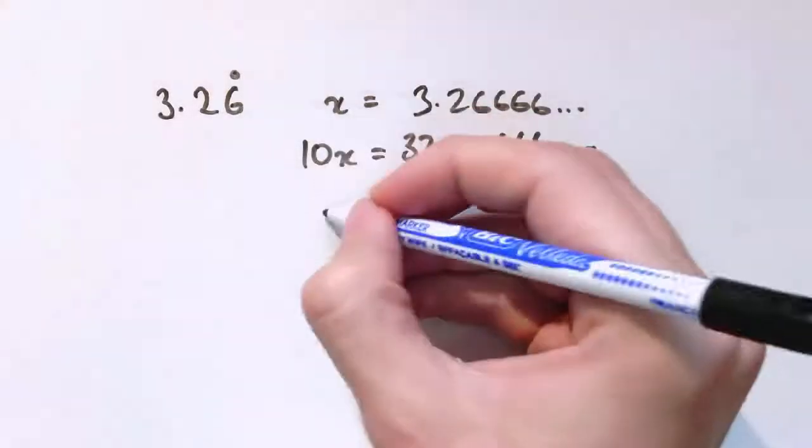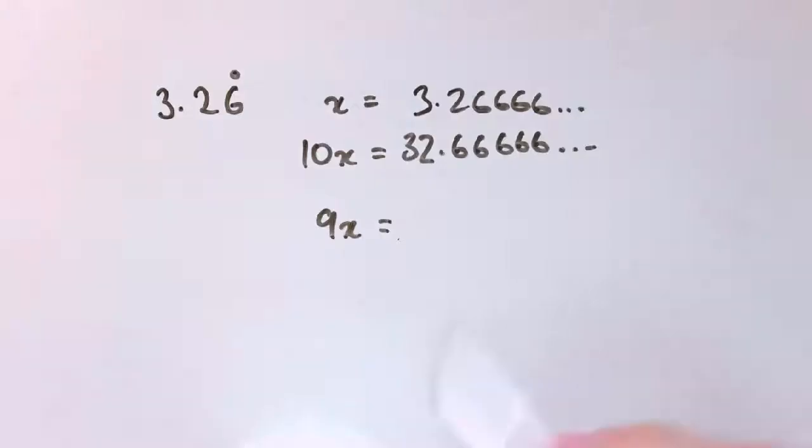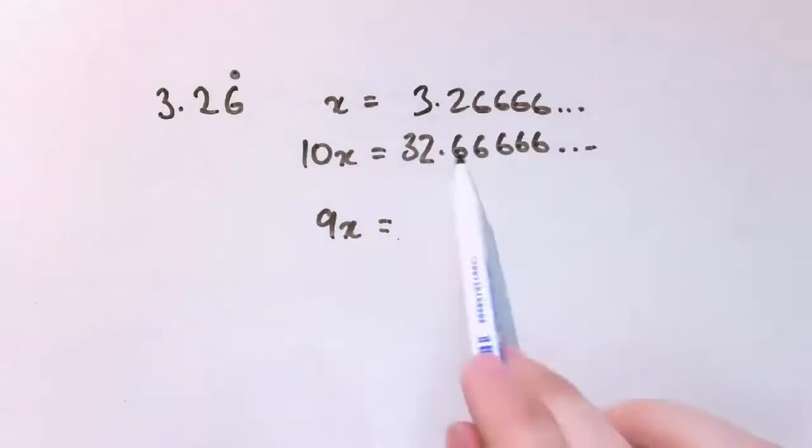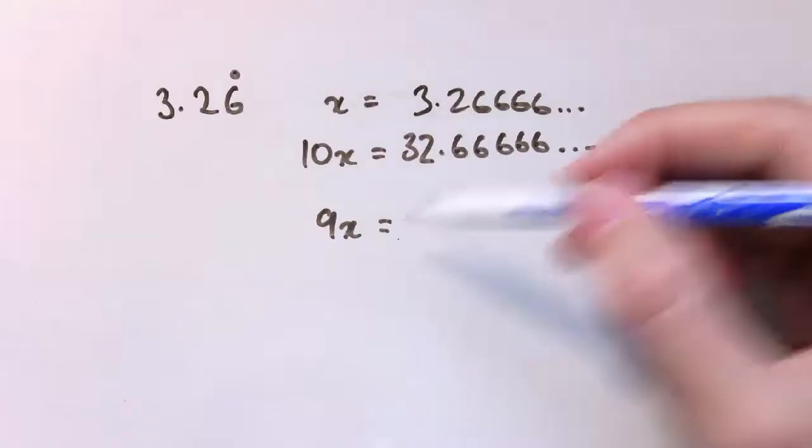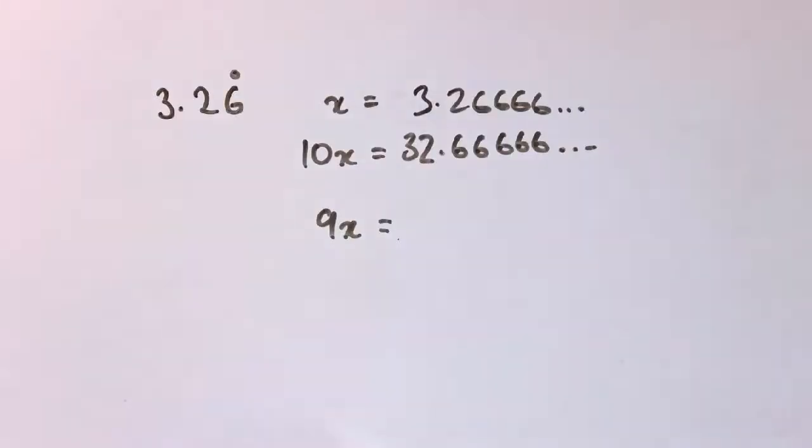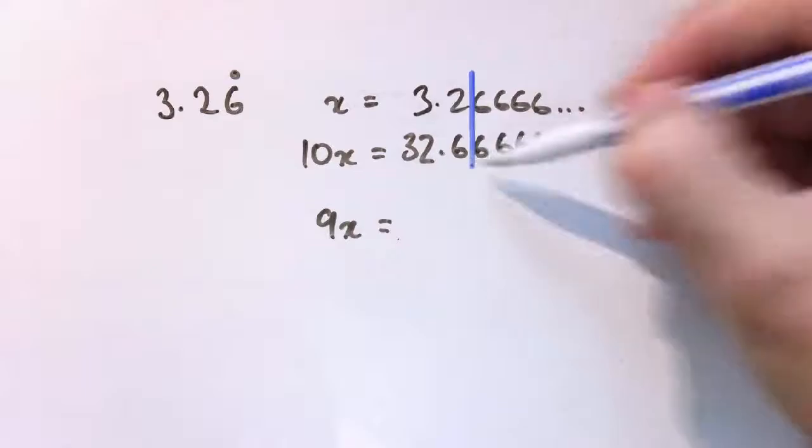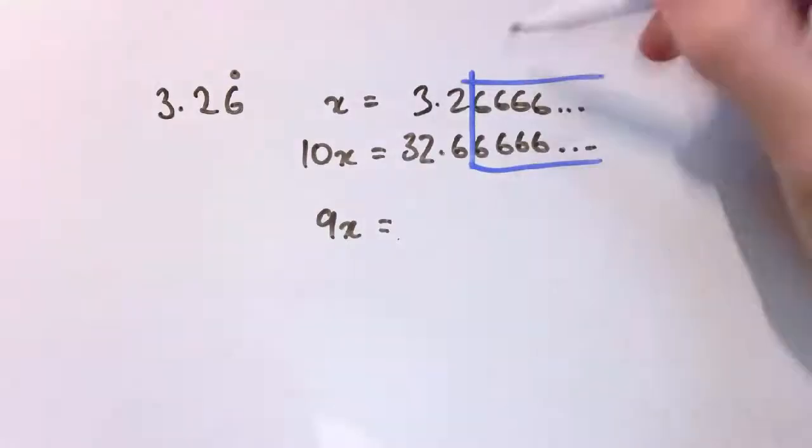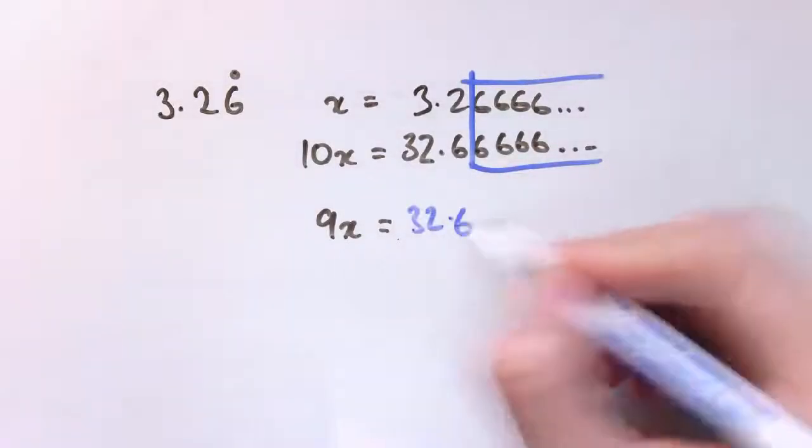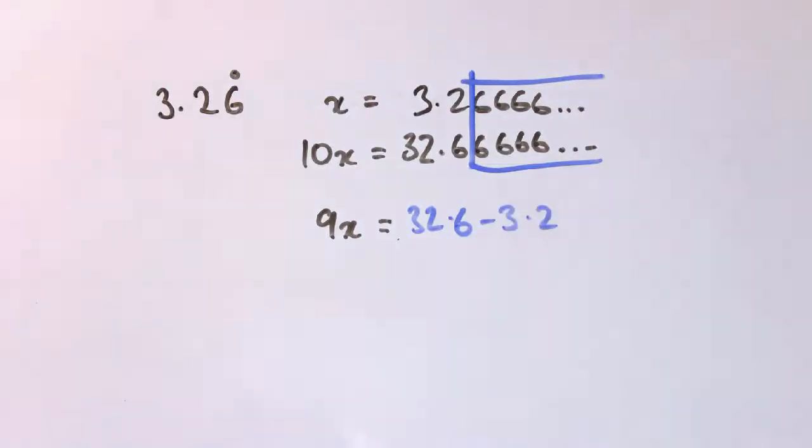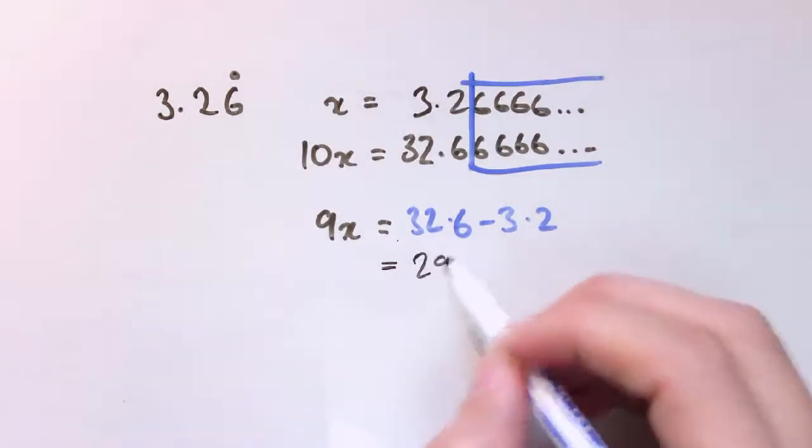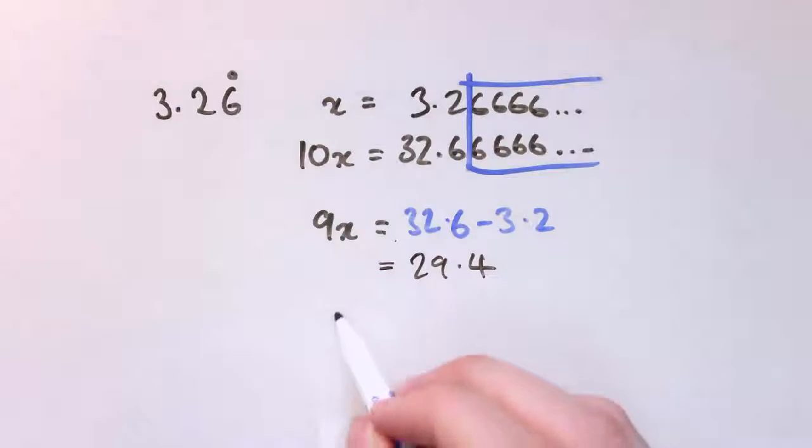We'll do the same thing. We'll do 10 times x and that gives me 32.6666. When I do 10x minus x that gives me 9x, and I've got to do 32.6 recurring minus 3.26 recurring. This is quite nice because when I do this subtraction all of these things are going to cancel out.